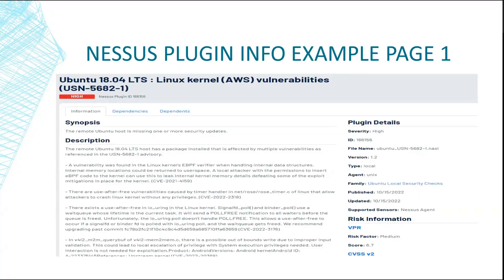Here's an example of a Nessus plugin page. This plugin is used to identify a vulnerability within the Linux kernel — specifically the Ubuntu 18.04 LTS Linux kernel AWS vulnerability. The plugin severity is high, and the identification number for this plugin is 166156, which is usually only six numbers. Moving to the second page,